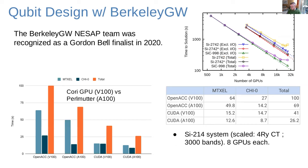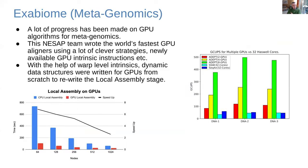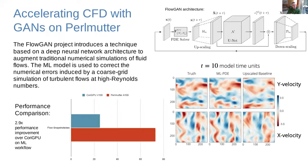Another comparison between the previous-generation V100 GPU from Summit and the A100 GPUs from Perlmutter shows about a factor of 1.6 or in some cases close to a factor of 2 in performance improvements across different applications.